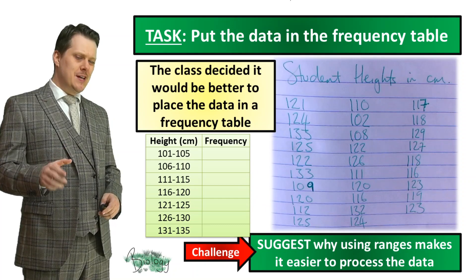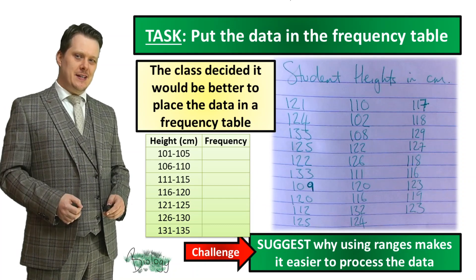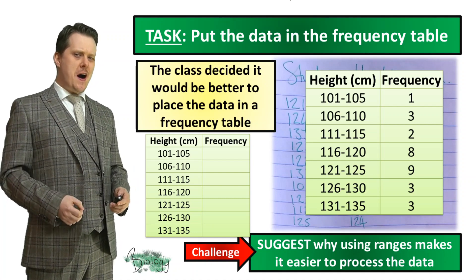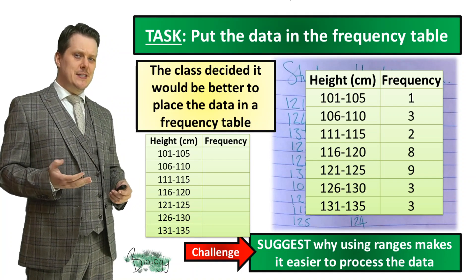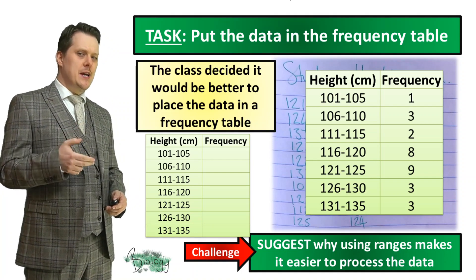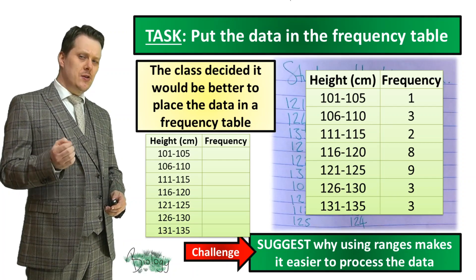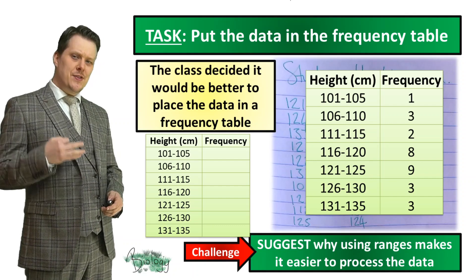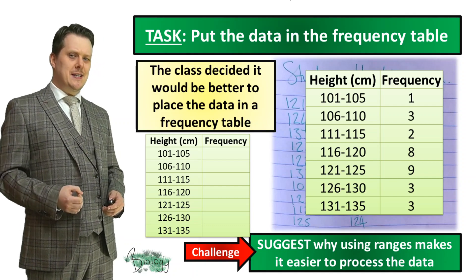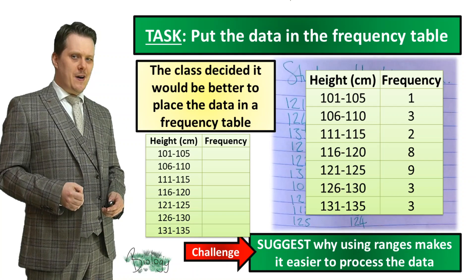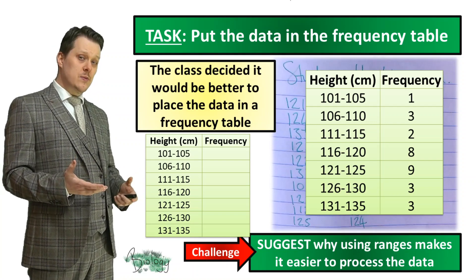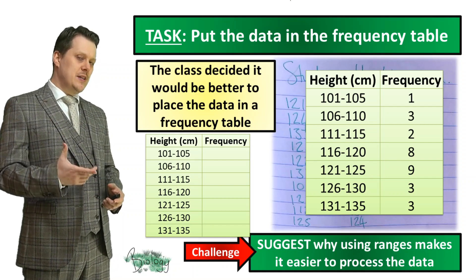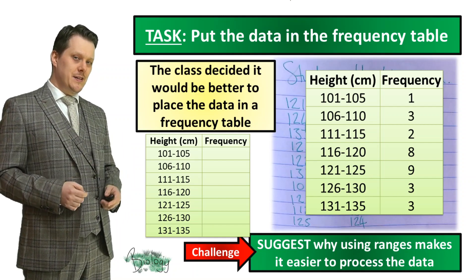Let's look at what the completed frequency table should look like. Starting from the top: a frequency of 1 in 101–105, 3 in 106–110, 2 in 111–115, 8 in 116–120, 9 in 121–125, 3 in 126–130, and 3 in 131–135. When we do these frequency tables you'll often see there is a range your data falls within — this makes it easier for us to look for patterns in the data.